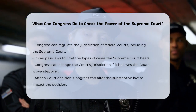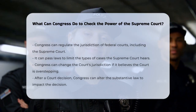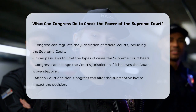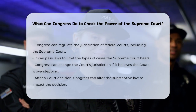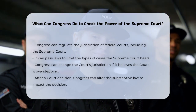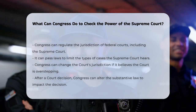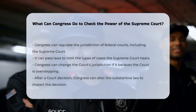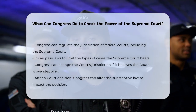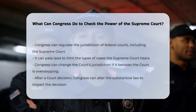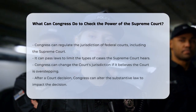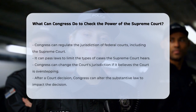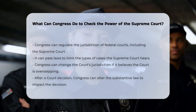First, Congress has the authority to regulate the jurisdiction of the federal courts, including the Supreme Court. This means Congress can pass laws that limit the types of cases the Supreme Court can hear. For instance, if Congress feels the Supreme Court is overstepping its bounds, it can change the court's jurisdiction to prevent it from hearing certain cases.